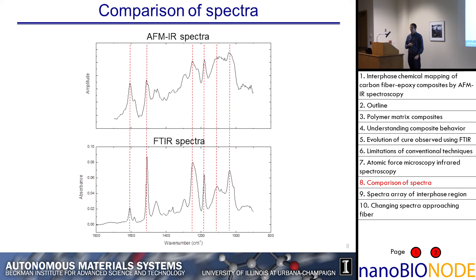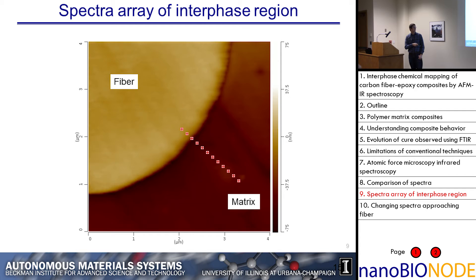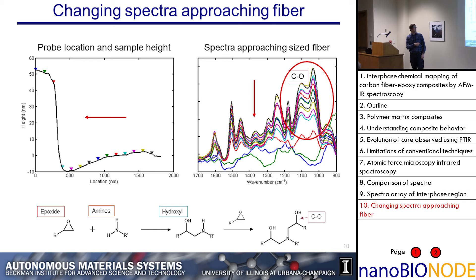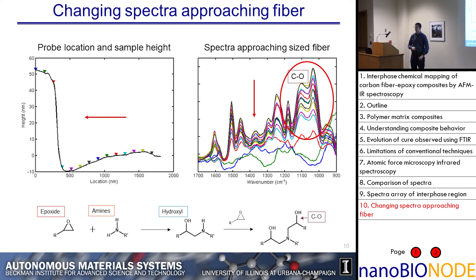The next step is to look at how the spectra changes in the region close to the fiber. I've taken a 4x4 micron AFM scan of the sample and we're interested in what the spectra does in this region. As we approach the fiber surface, we see a decrease in the overall signal. A related study showed this is due to the change in height near the surface — it's quite difficult to get a perfectly flat composite sample because the components polish at different rates. So there is a decrease in the overall signal, however we can normalize this signal and expect the ratio of different peaks to remain the same for a given spectra.